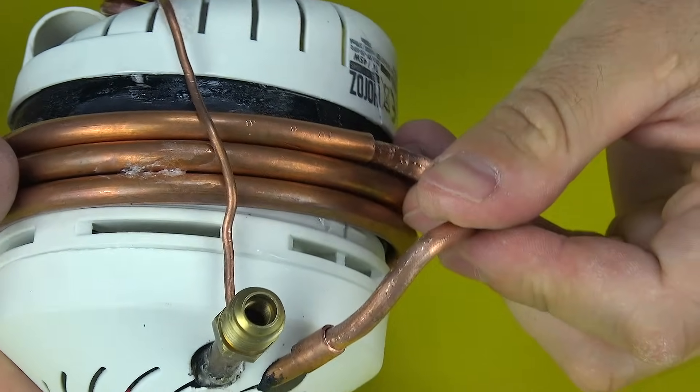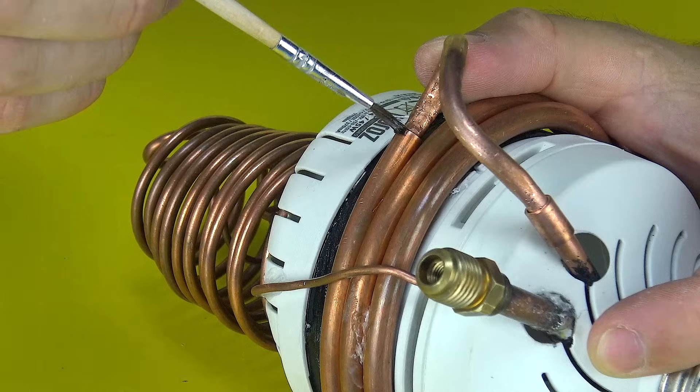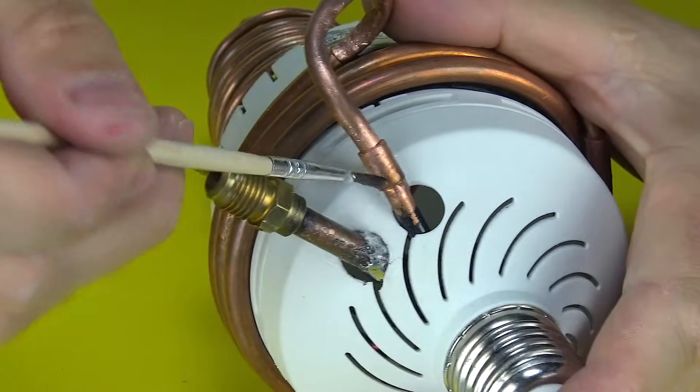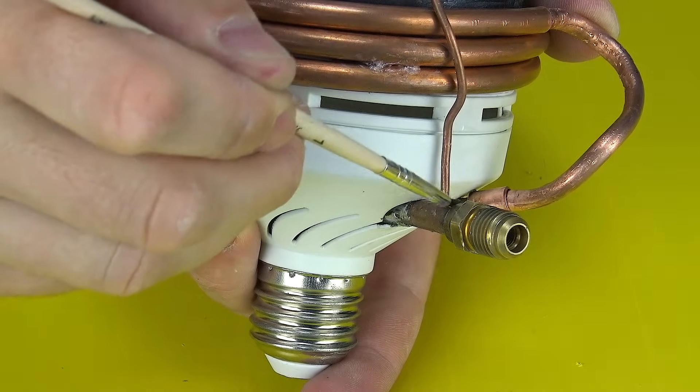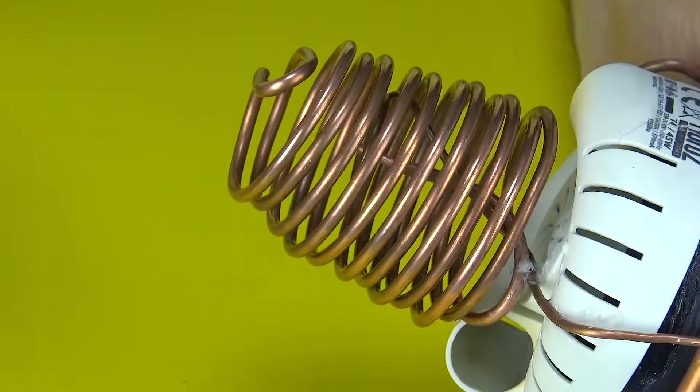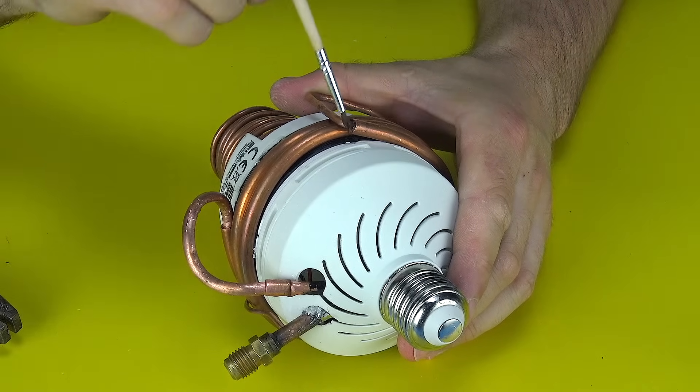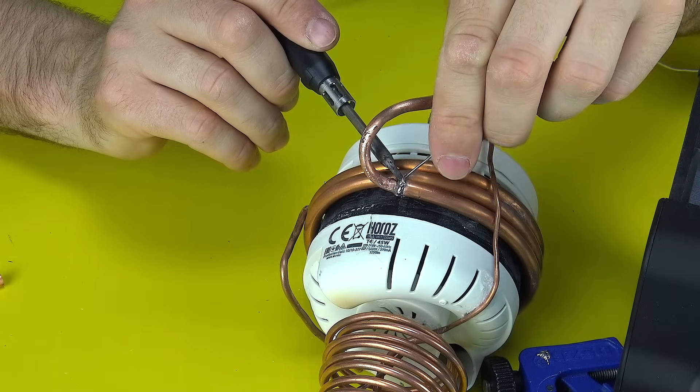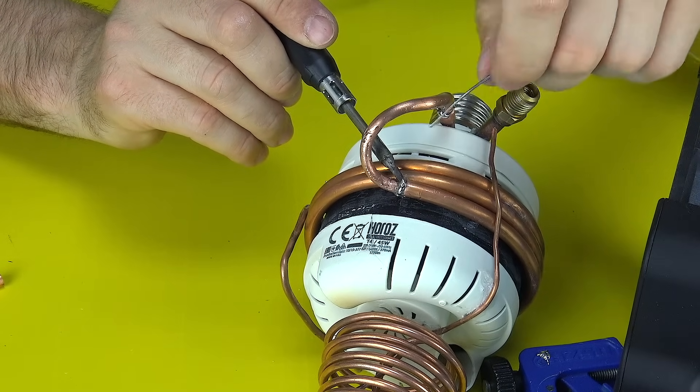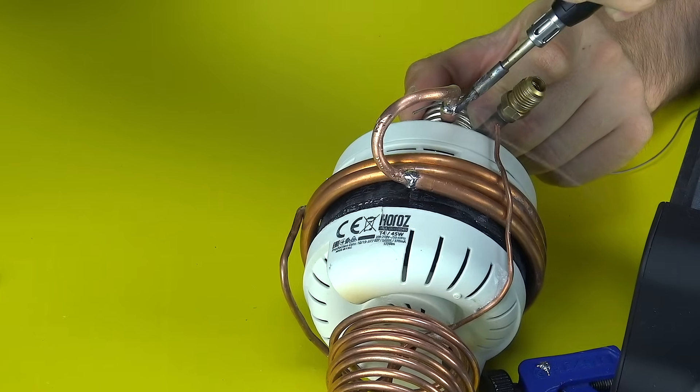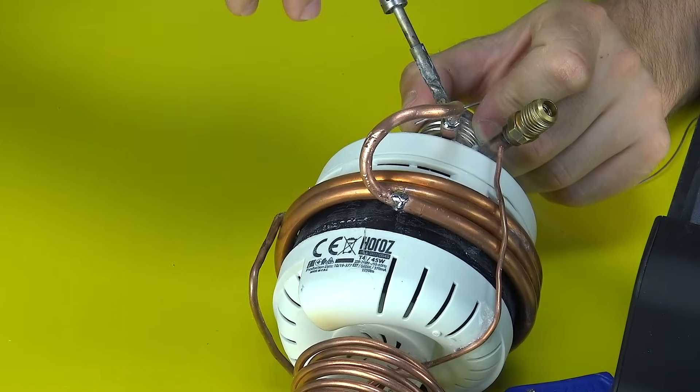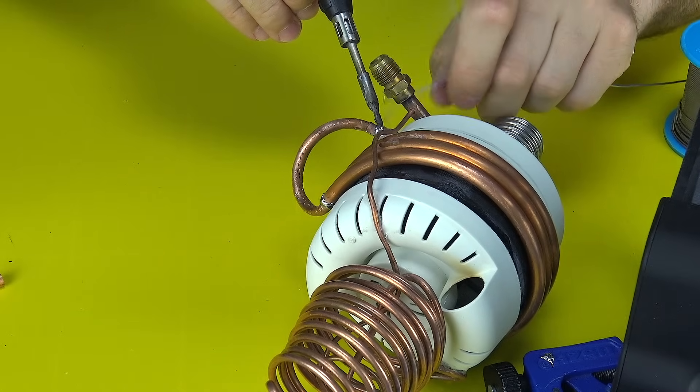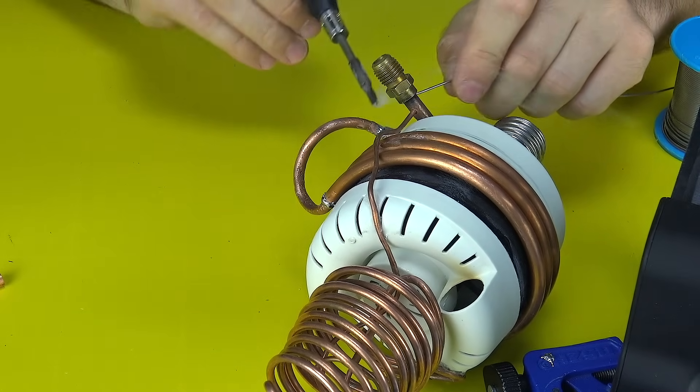A critical stage in assembling this system is ensuring complete airtightness of all connections. For this, I use specialized flux and solder with a melting point around 500 degrees Celsius – materials that provide a reliable and durable metal bond. I pay close attention to the quality control of the solder joints, as even the slightest leak can compromise system efficiency or cause failure. Therefore, precision and meticulousness during this process are the foundation for the successful and stable operation of the air conditioner.